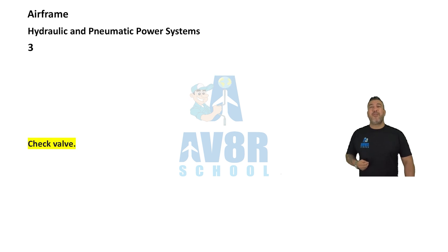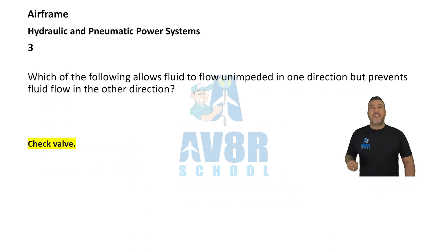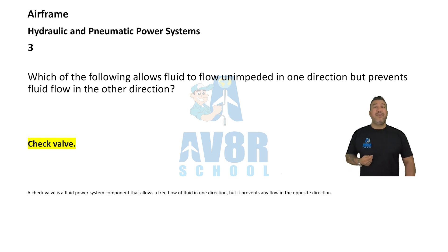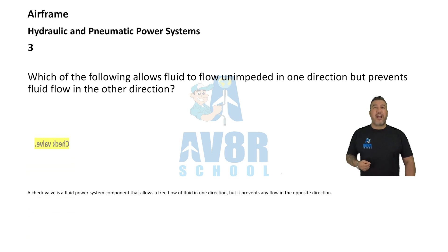Number three: Which of the following allows fluid to flow unimpeded in one direction but prevents fluid flow in the other direction? It is called a check valve.